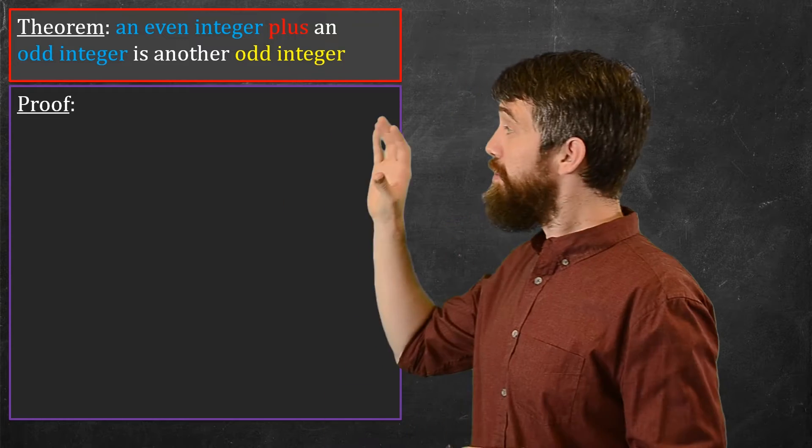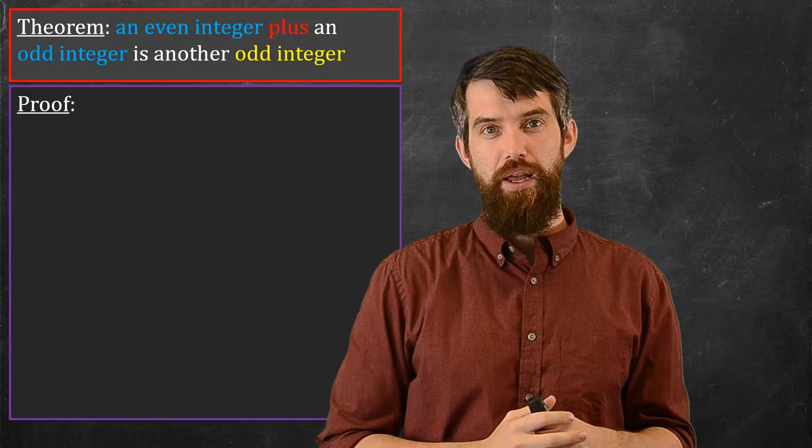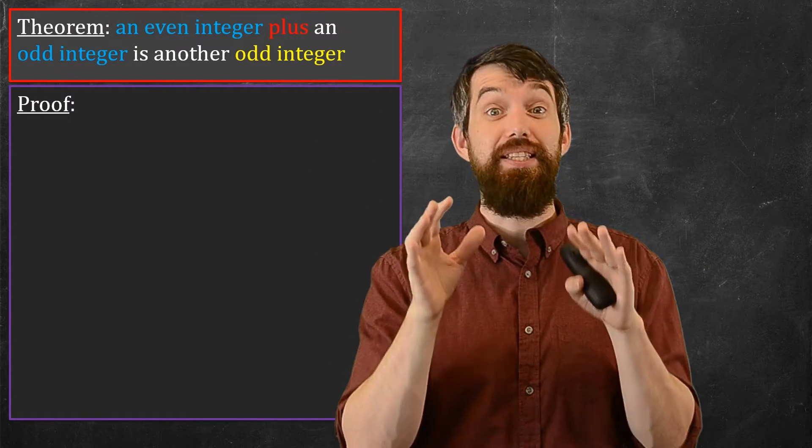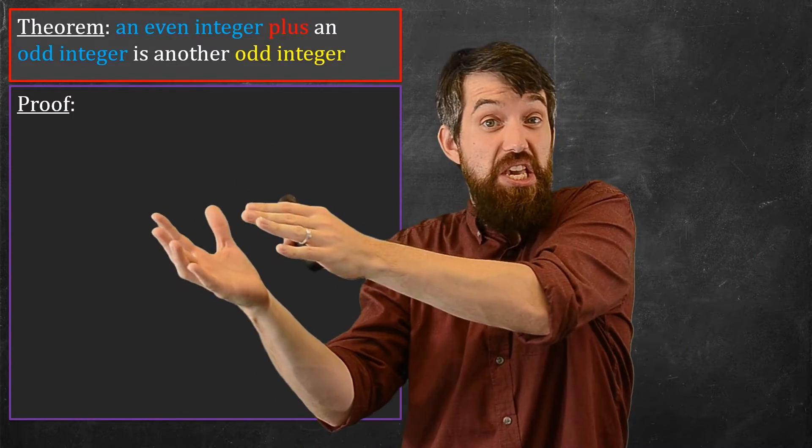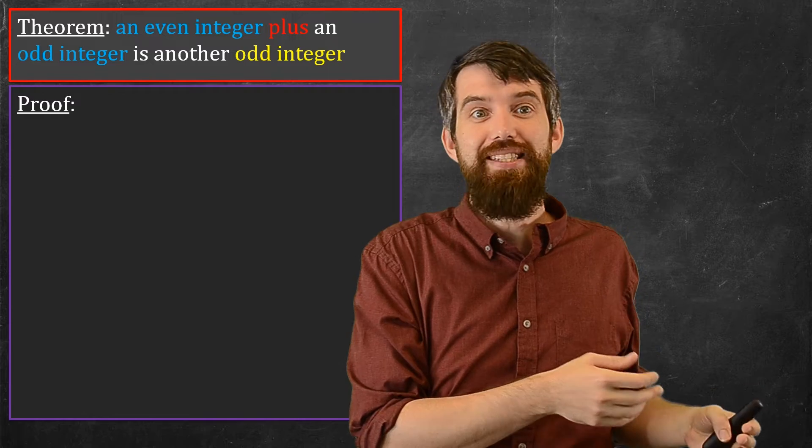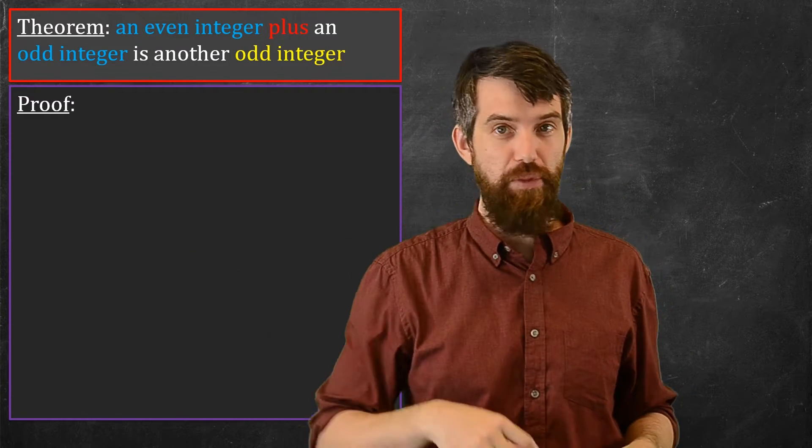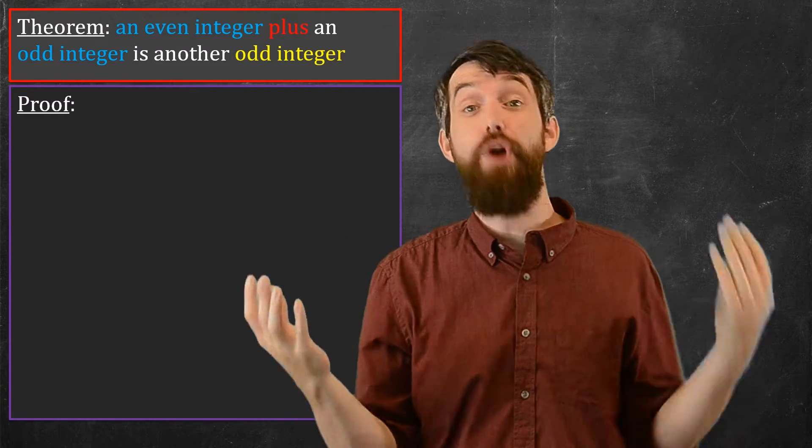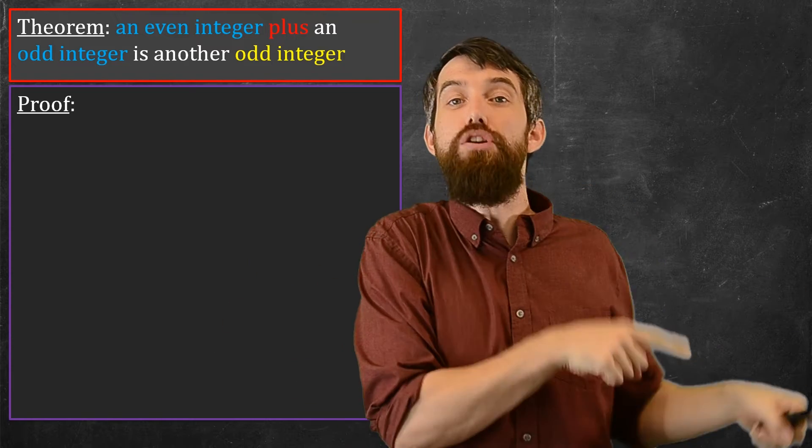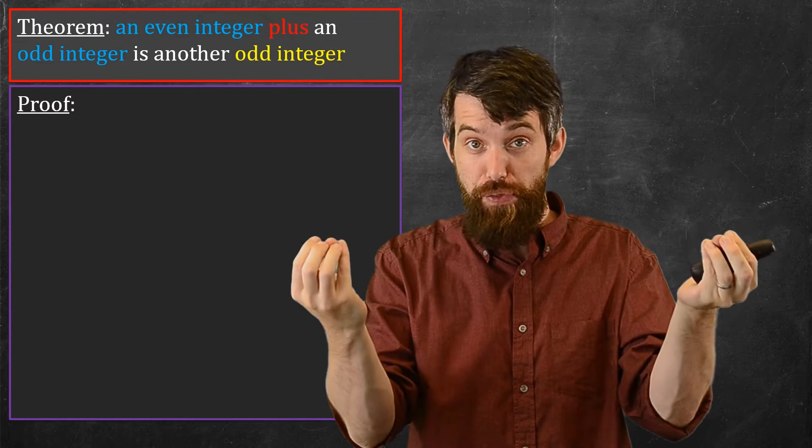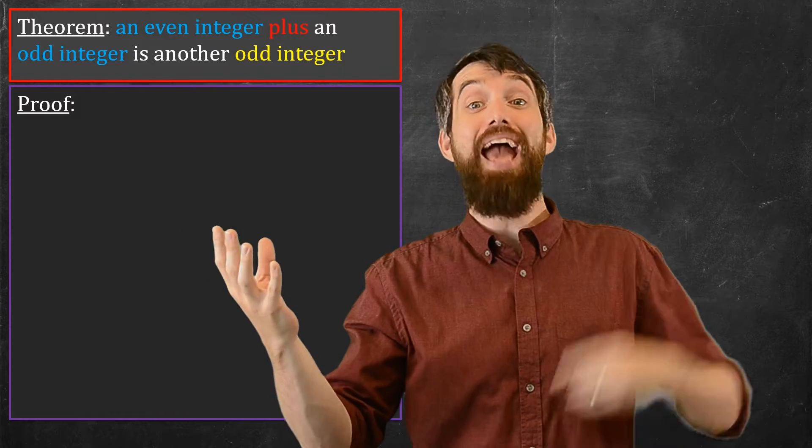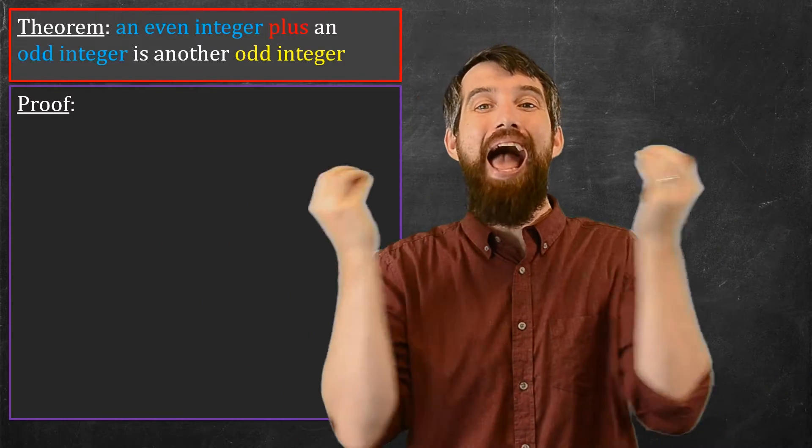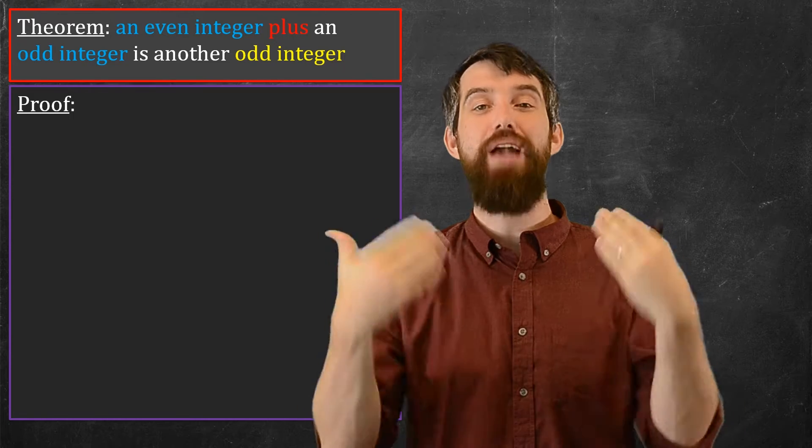Now, let's try to prove this particular claim. The first thing I want to note is this claim is written in the form of if p, then q. It says if you have some assumptions, namely you've got an even integer and an odd integer, then you get a conclusion that the sum of those two things is an odd integer. So it's saying if you've got an m and an n that's even and odd, then you add the m and the n, and you get an odd.